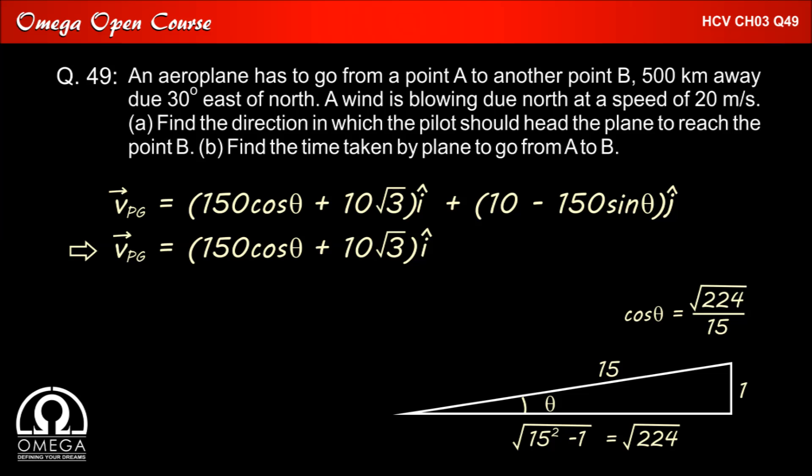And hence the value of cos theta is √224 divided by 15. Putting these values, we get speed of plane with respect to ground equals 150 × (√224/15) + 10√3, which on simplification gives approximately 167 meters per second.